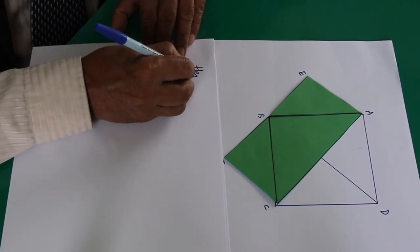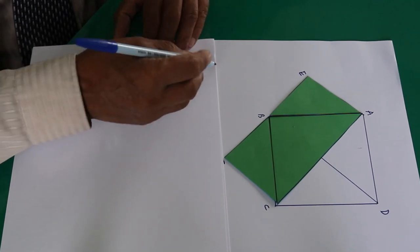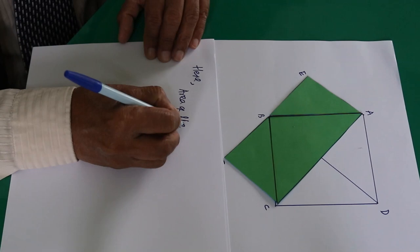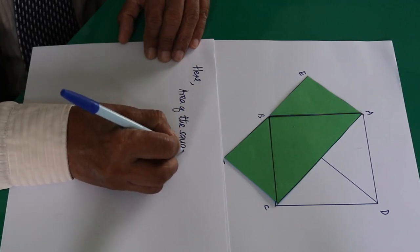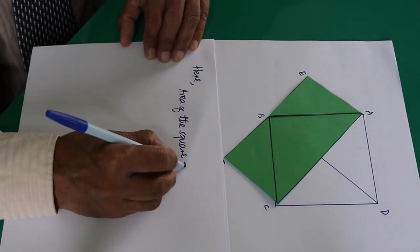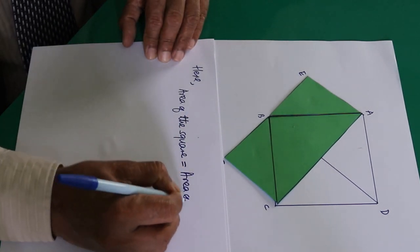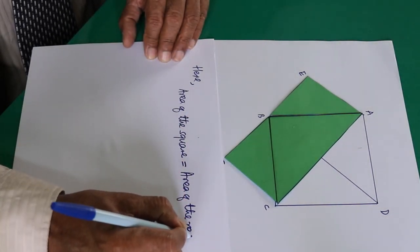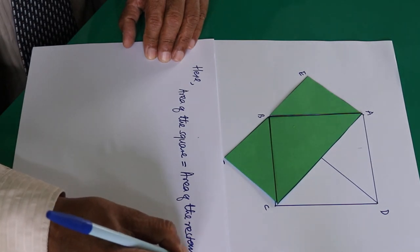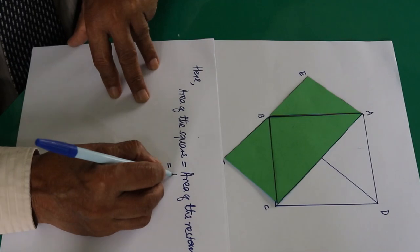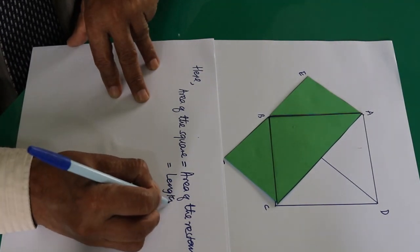Here, the area of the square equals the area of the rectangle. The area of the rectangle is length times breadth.